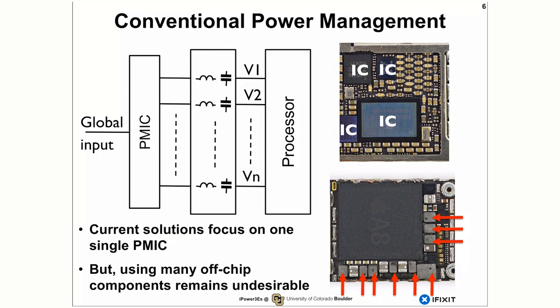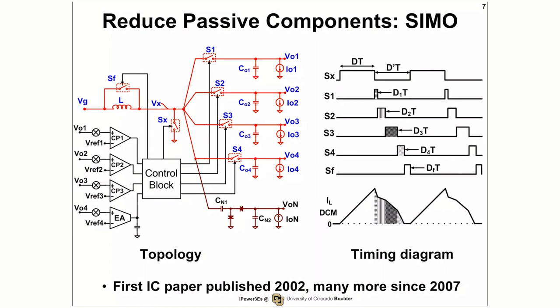Now if we're actually doing this from the conventional power management methods — with a single power management IC and a large network of all the off-chip passive components — then the majority of the board area is dominated by the discrete passive components, which is totally undesirable. So one method to actually reduce the passive components is a single inductor multiple output DC-DC converter. The first integrated circuit paper on single inductor multiple output DC-DC converter was published in 2002, and since 2007 there were a lot more papers published with all the techniques related.